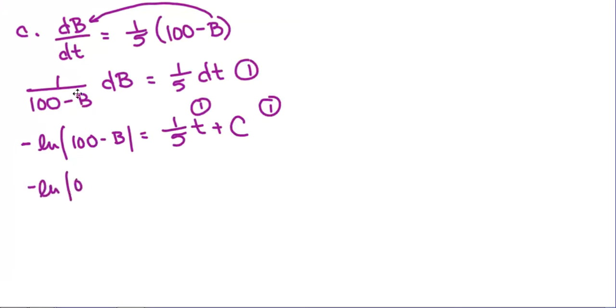So let's see here. B is 20. B is 20. T is 0. So, 100 minus 20 is 80. So the negative natural log of 80 is equal to C, because one-fifth times 0 is 0. So let's go back up here and plug that in.